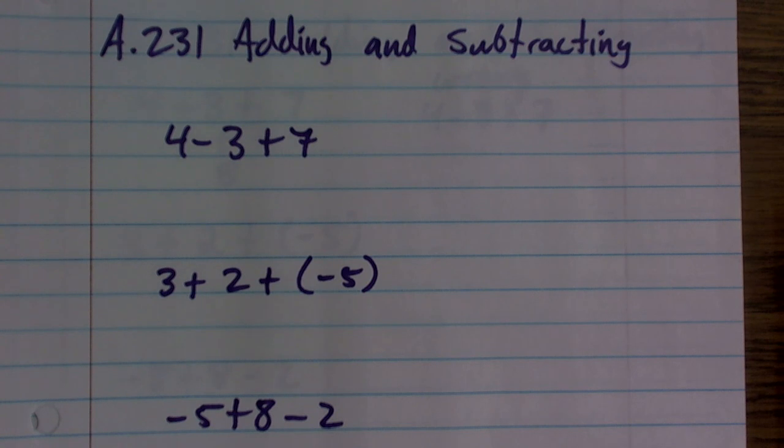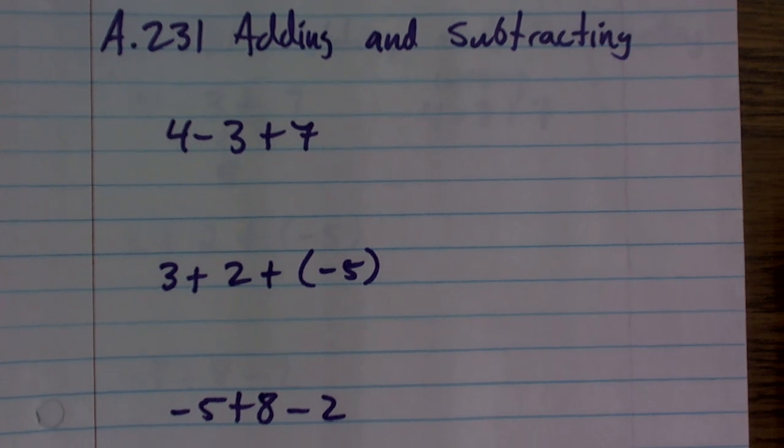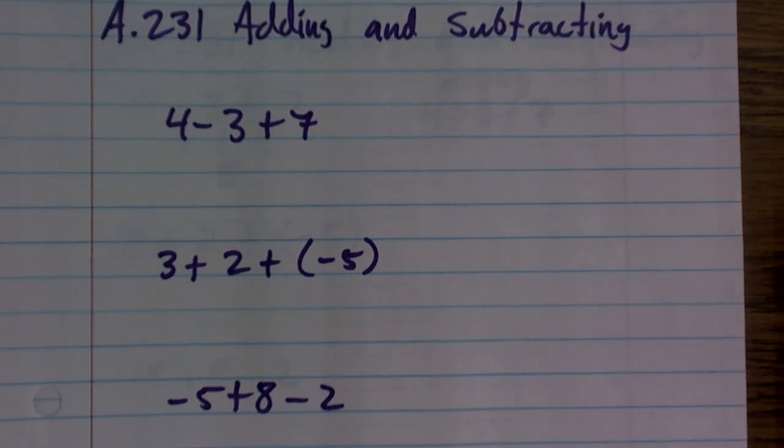I'm going to go through this and use some of the previous information from previous videos on order of operations. When you're doing adding and subtracting, it's pretty basic, but the main important thing you need to make sure you follow is the rule of always going from left to right.